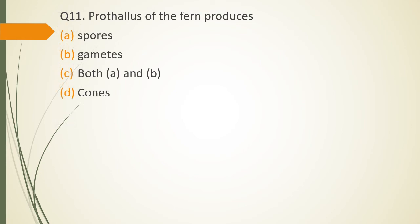Question No. 11: Prothallus of the fern produces spores, gametes, both A and B (that is both spores and gametes), or cones. Prothallus of fern produces? The correct answer is option C produces both spores as well as gametes.